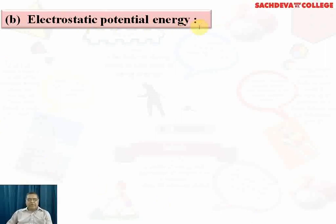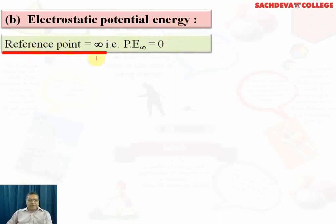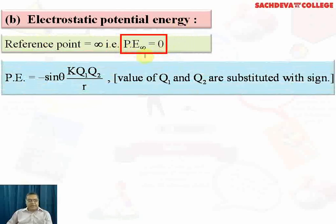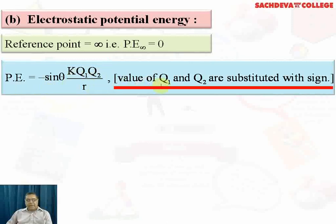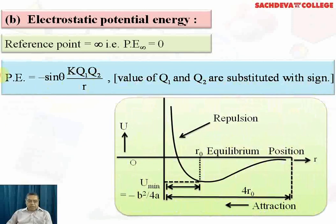Electrostatic potential energy is estimated using Coulomb's law of electrical force, giving electrical potential energy as kq₁q₂/r. The reference point is infinity, where potential energy is zero. The potential energy is expressed as kq₁q₂/r, where the values of q₁ and q₂ are substituted with their signs.